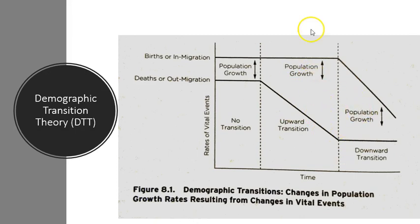In stage three, the fertility transition kicks in to catch up to the epidemiological or mortality transition. People realize that as their kids have a greater chance of survival, there's no need for so many kids. The fertility level therefore begins to decline, and as a result population growth again reaches sort of an equilibrium. This model is not without its critics, but it has become a very useful way to conceptualize the relationship between births and deaths across societies. It does not have perfect empirical support, but it does have incredible utility as a general rule of thumb.